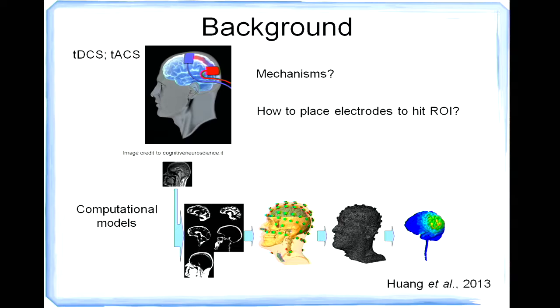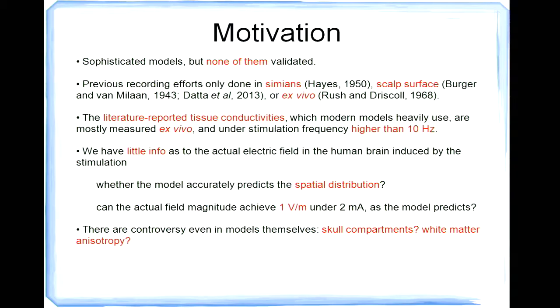So right now, we have very sophisticated modeling techniques, like very complicated and advanced software and toolboxes to do this. But the problem is not even a single one of these models has been validated by comparing to actual recordings inside the human brain. And previous recording efforts, they're only done either in monkeys or on the scalp surface of human heads or even just ex vivo. And the other problem is the connectivity values used in the modern models. They're actually measured ex vivo mostly and also under frequency of at least 10 hertz. So actually, up to now, we have very little information about the actual electric field achieved inside the human brain under the simulation. We don't really know if the model is telling the truth about the spatial distribution or the actual achieved magnitude of the field.